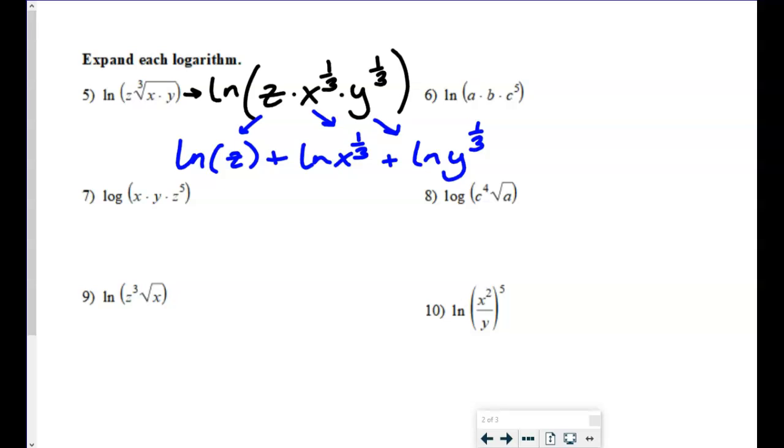Now we're not done expanding, because the last property we always have to worry about is the power property, or the Mario property. If there's a power, it actually belongs down in front of the logarithm when you're expanding. So each of these one third powers can come down.